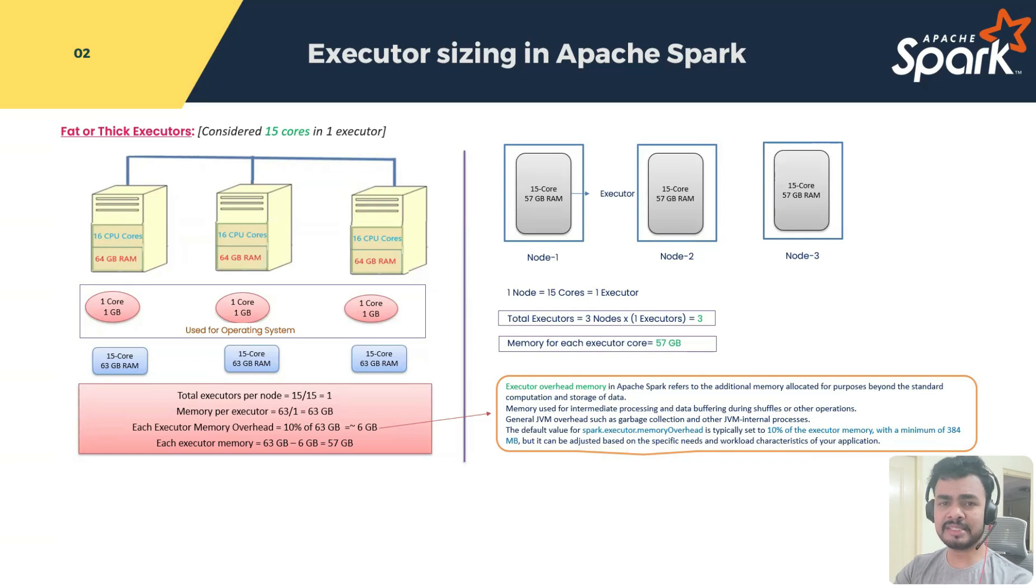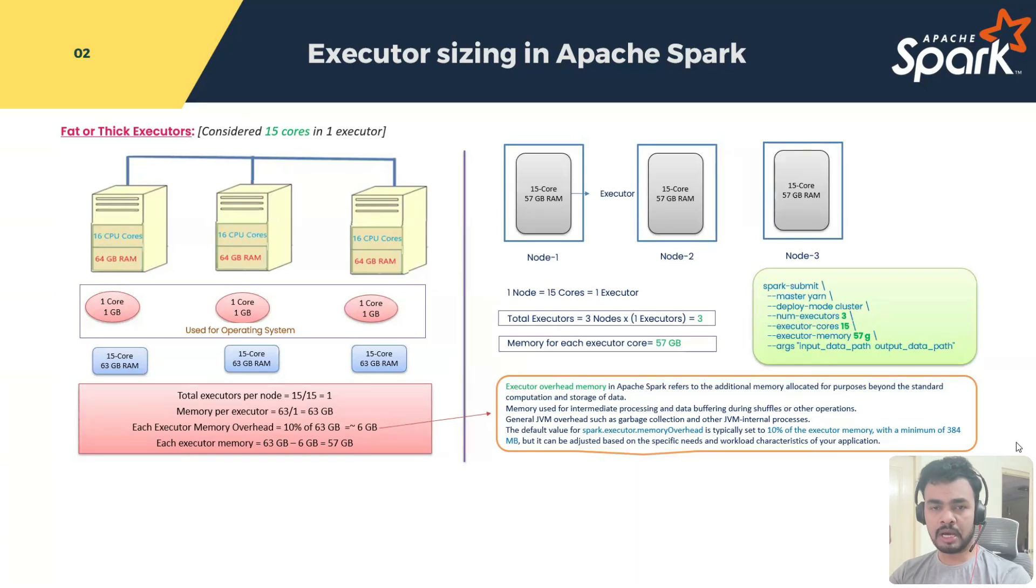Now, if this is the case, while we are submitting our Spark application, what could be our configuration? This is our configuration. When we write a spark-submit, of course, we will give master as YARN or Kubernetes. Then deployment mode is cluster. Then these three are very important because we are focusing on these three first. Number of executors are three, executor cores are 15, executor memory is 57 GB. Till now, are you able to understand? Yes.